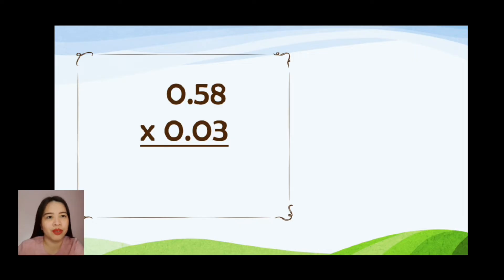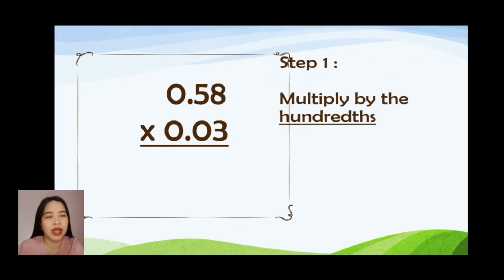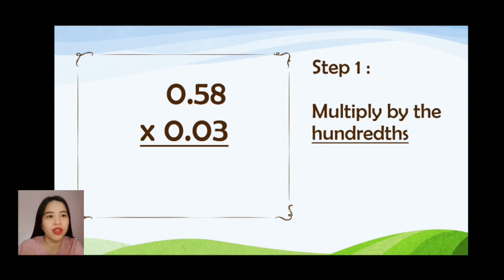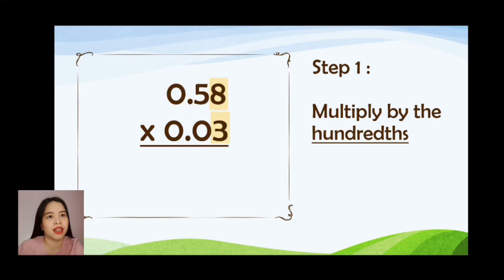I will teach you now. Step number 1: we are going to multiply by the hundreds. So we are going to multiply 0.58 by 3. Let's start with 8 times 3, which gives you an answer of 24.